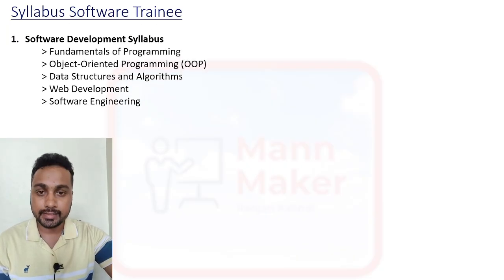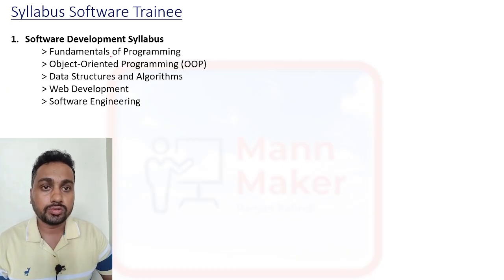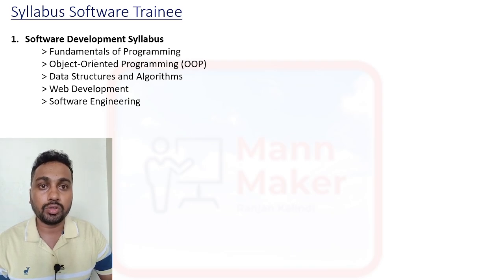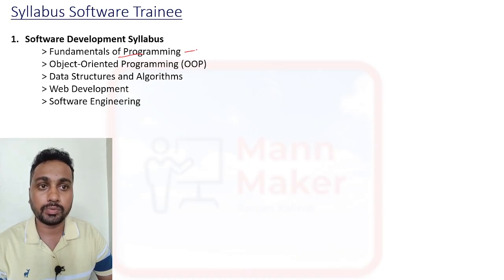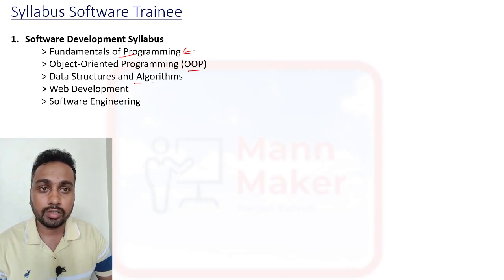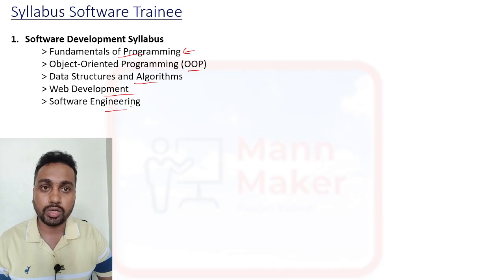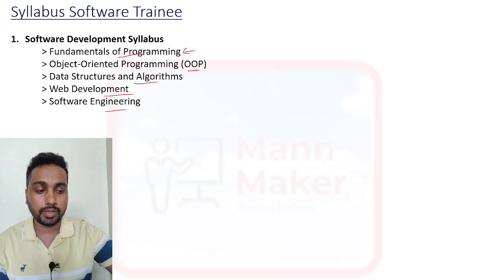The syllabus is divided into four modules. The first is Software Development. In Software Development, you will find fundamental programming — like C, Java, and C++. From that you will get basic questions. Then there is OOPS — Object-Oriented Programming — Data Structures and Algorithms, Web Development, and Software Testing. From all of these, you will get questions in Module 1: Software Development.